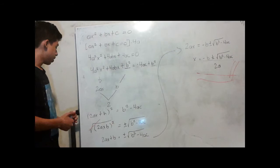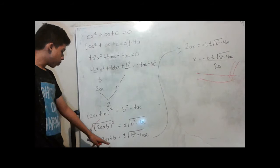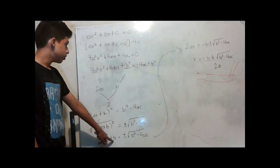This equals b² minus 4ac. Then we add the square root to both sides and we also add the plus or minus sign. Here we cancel the square root with the square.